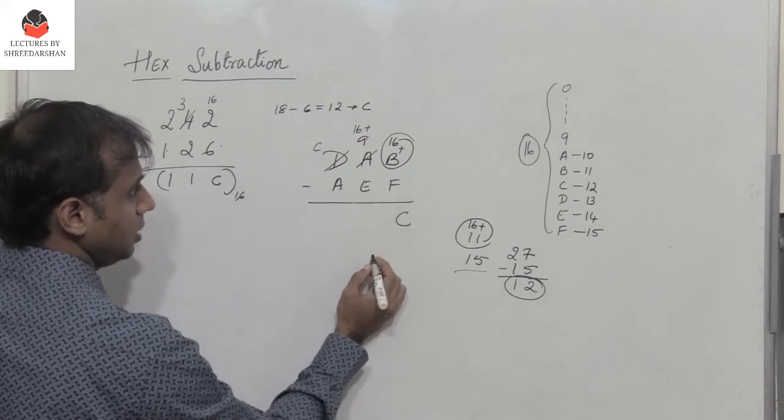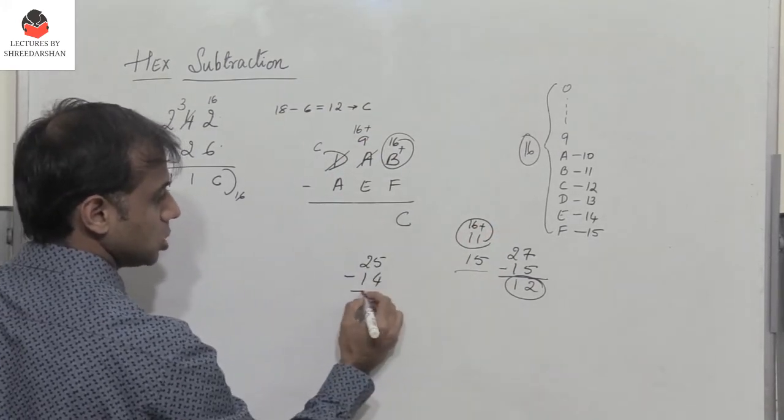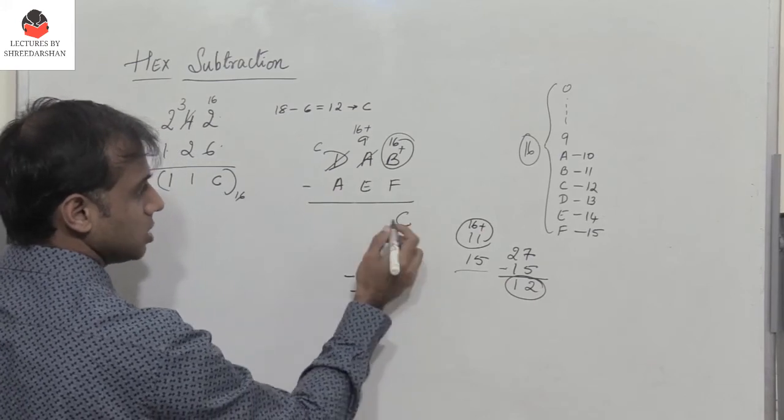What is 16 plus 9? It is 25. Minus E, which is 14, I get 11. 11 is B.